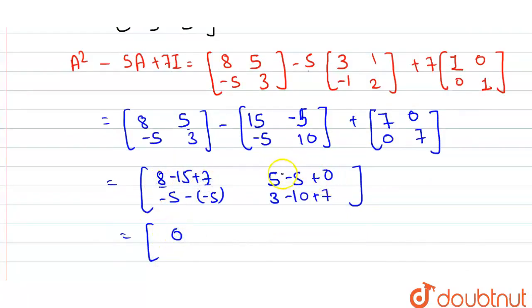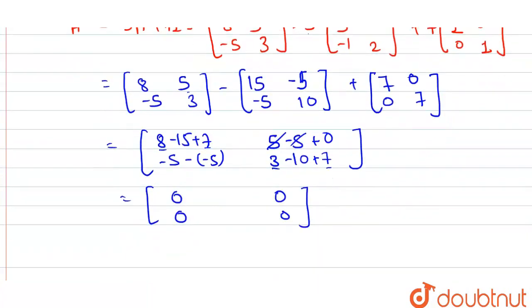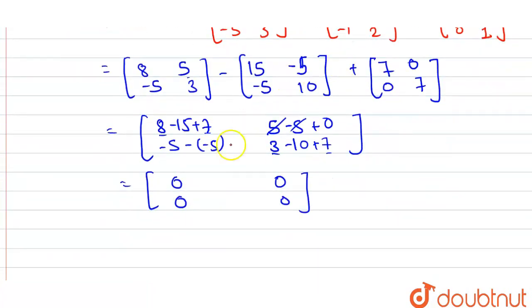So our value is 8 plus 7 is 15, 15 minus 15 equals 0. Here plus 5 and minus 5 get cancelled out. Here minus 5 and negative of negative 5 gives positive 5, so again 5 minus 5 equals 0. And 7 plus 3 equals 10, 10 minus 10 equals 0. It means the value of A squared minus 5A plus 7I equals the null matrix. Each element equals 0, so this is our final answer. Thank you.